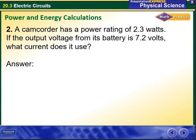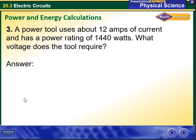So here we have a camcorder has a power rating of 2.3 watts. Here what is given is power. If the output voltage from its battery is 7.2 volts, what current does it use? So here we have the power is given, the voltage is given, and what I have missing is the current. So I put them all together, I substitute for I, and I am going to have my answer.